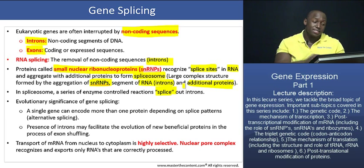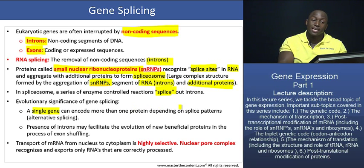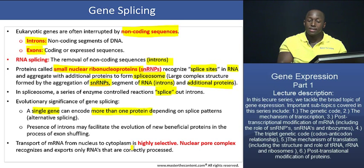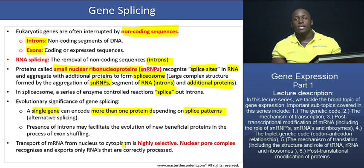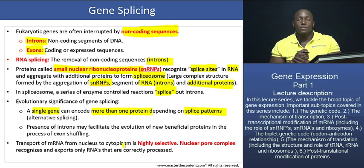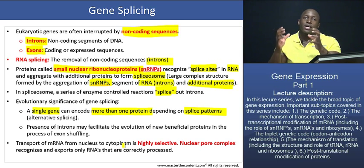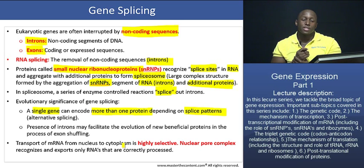Gene splicing has a very important evolutionary significance. One is that a single gene can actually end up encoding more than one protein, depending on what splice patterns are used. What happens is that you can splice mRNA differently to create different gene products — so one gene can actually result in different proteins depending on how you splice that mRNA product.